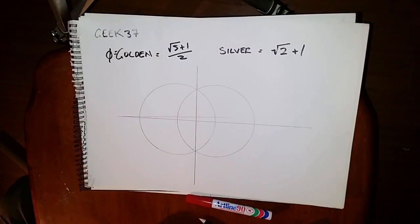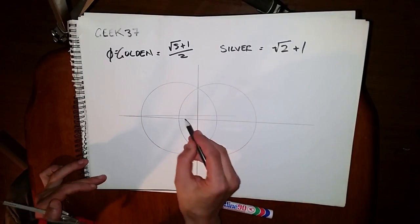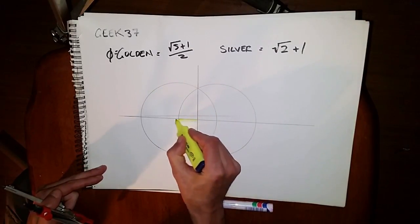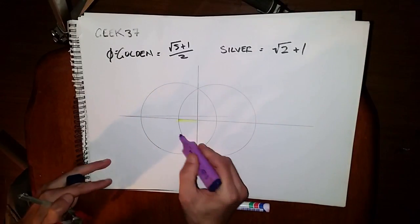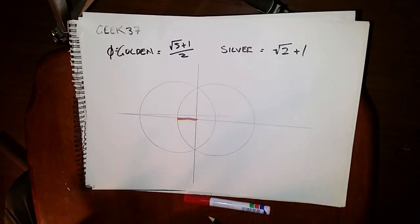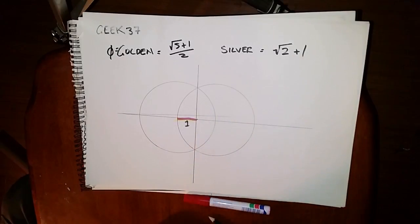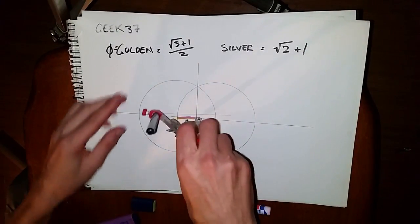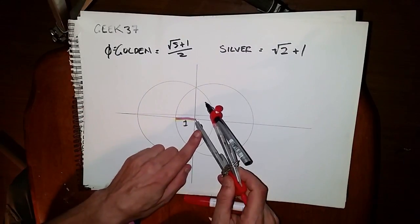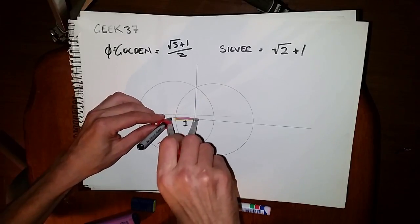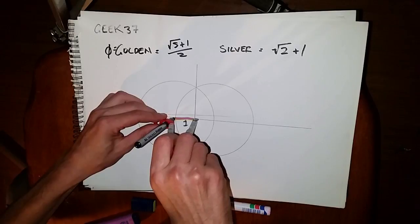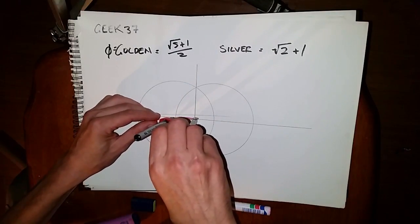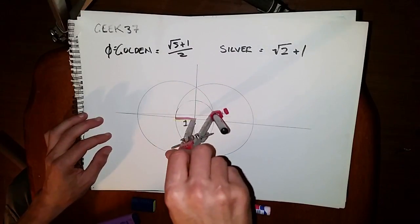So we're going to define the half radius of this circle. Now this is defined as one. Now with our centre point there, put our compass there, and reduce it to one of the... trying to be as accurate as I can. So now we have the circle there, and so we have our compass set to what we defined as one.